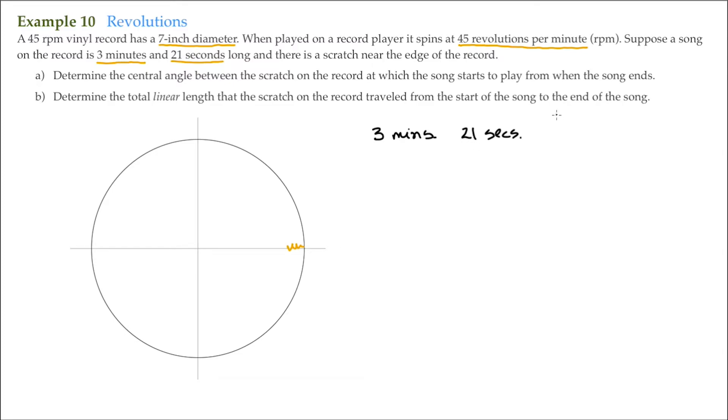So 21 seconds, that's 21/60 of a minute, which comes out to be 0.35 minute. So 3 minutes and 21 seconds, that's the same as 3.35 minutes. So now we've expressed the time strictly in minutes.